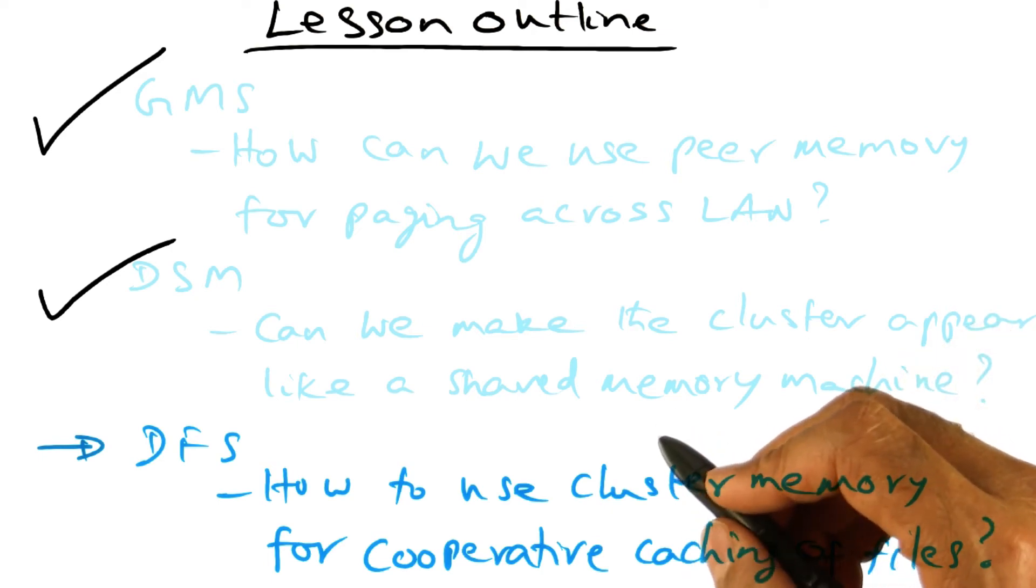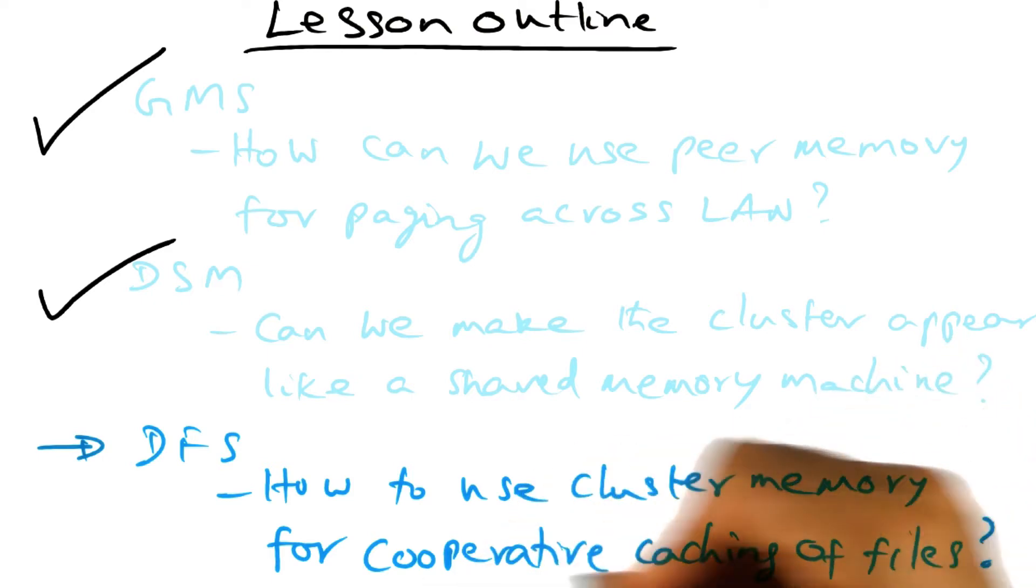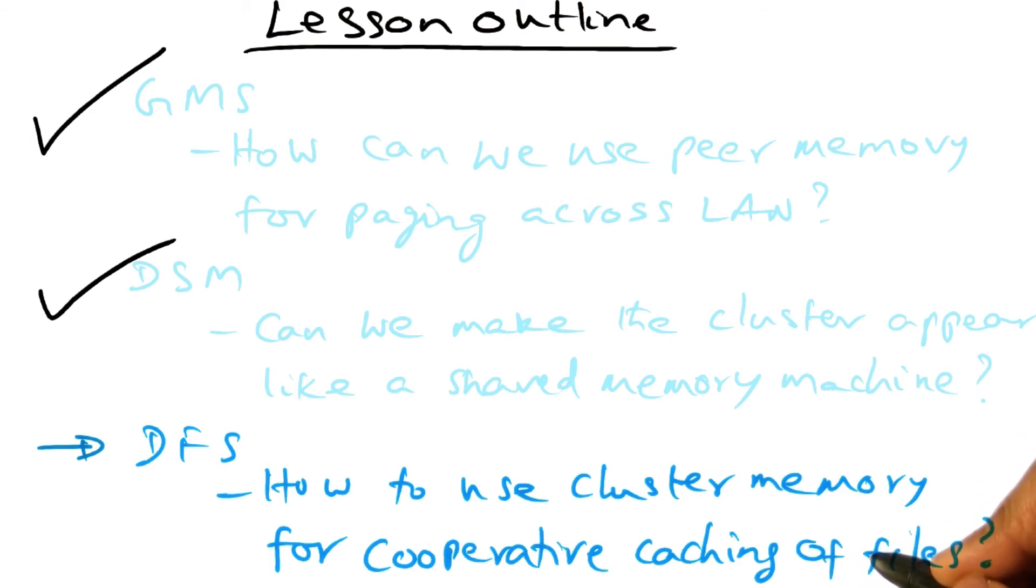In other words, since we know that the disk is slow, we would like to avoid going to the disk as much as possible and retrieve the data from the memory of a peer in the network if that peer has previously accessed the same file. That's the idea behind cooperative caching of files.